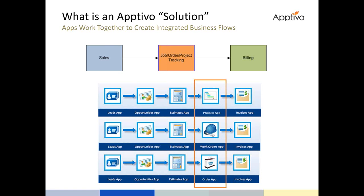Those three areas are: sales — acquiring deals; managing the fulfillment of your deals, so tracking your jobs, work orders, or projects — delivering that service or product to your customer; and then collecting payment from your customer. There's also a customer support aspect — managing the relationship after you sell. But as far as acquiring business, these are the three key areas of your business process.